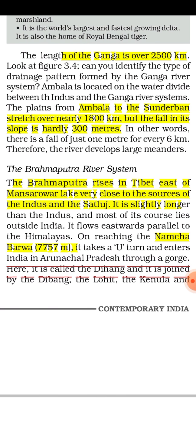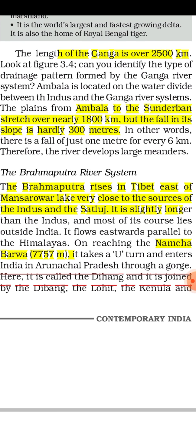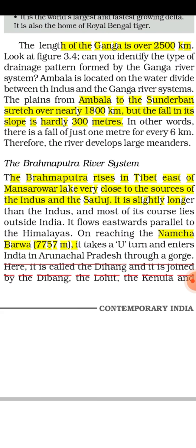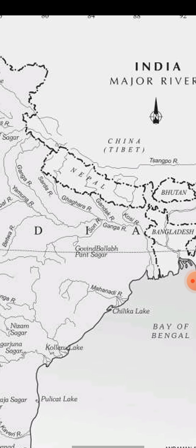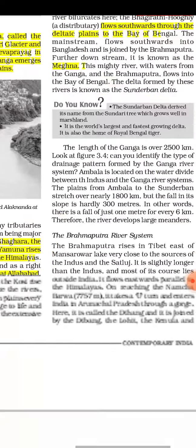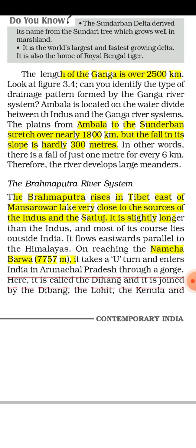The length of the Ganga is 2500 km. Compared to the Indus, the Ganga river system length is less, but it is the longest river system of India. Ambala is located on the water divide between the Indus and Ganga river systems. A water divide is an upland area between two river systems. Ambala works as the water divide between Indus and Ganga — this is an important exam fact.